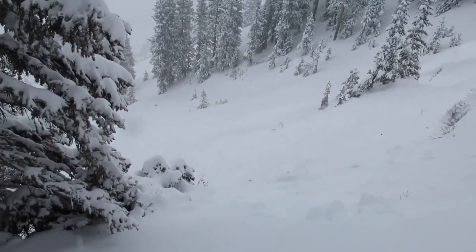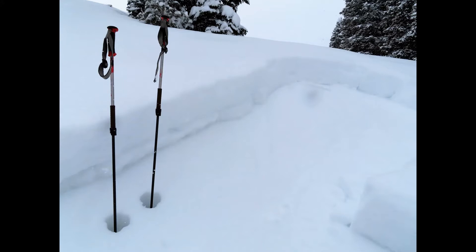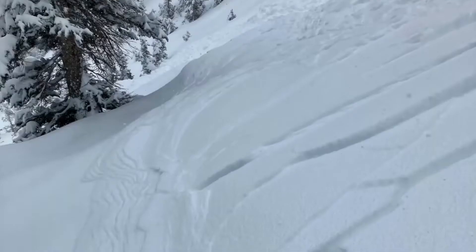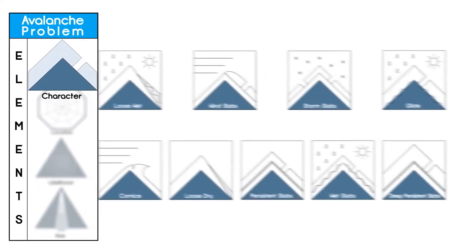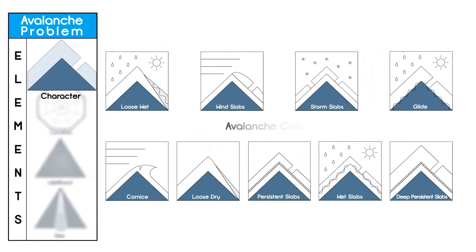The accompanying photo shows a recent or relevant image to show what the avalanche problem or signs of instability might look like in the backcountry. Avalanche characteristics fall on a continuum, but for the purpose of simplifying travel advice, we define them into one of nine avalanche types.